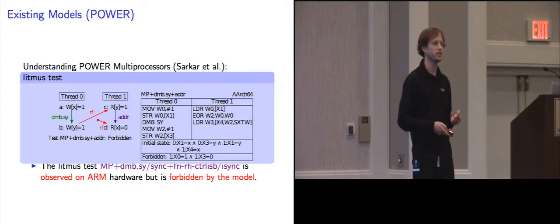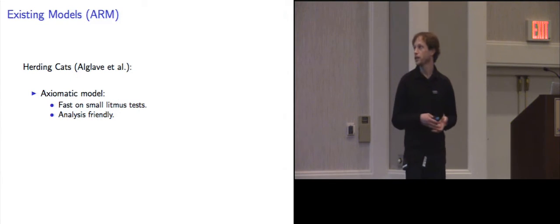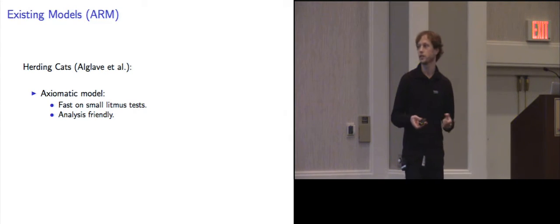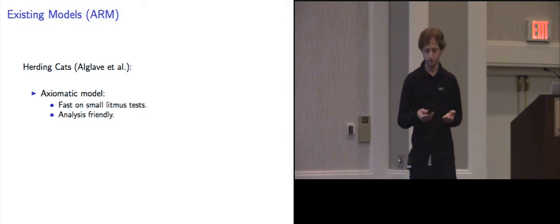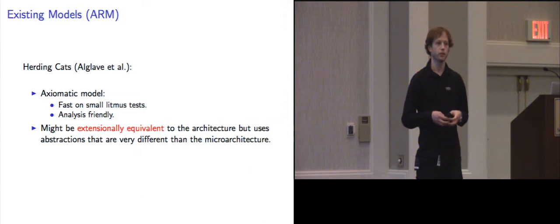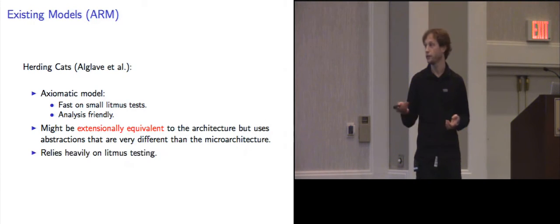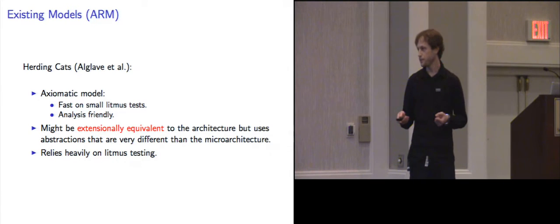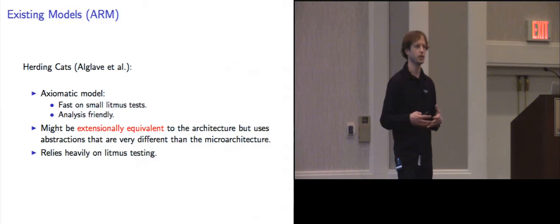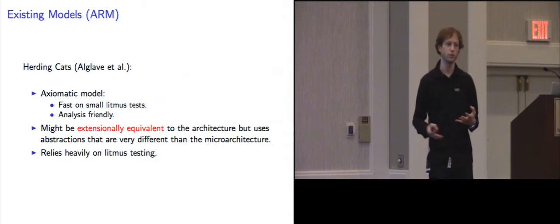The Power model doesn't fit very well to the ARM architecture, so how about using Alglave's axiomatic model for the ARM architecture? That's quite a nice model. It runs very fast on small tests and it's quite analysis-friendly. But although it might extensionally be equivalent to the architecture, it uses an abstraction that is very different from the microarchitecture itself. So how do you establish confidence in such a model? You have to rely heavily on testing. We would like to do something better: have discussions with ARM staff and establish confidence in the model that way.